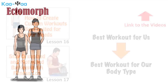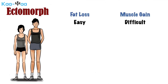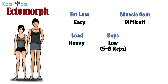For an ectomorph, it is really hard to put on weight, which means they do not have to worry about fat gain. On the other hand, their muscles have a tendency of remaining small and weak. Considering this, the best approach for them is to choose a workout routine with higher loads and low repetitions. The rest period between sets should be kept long. The high load provides their body high stimulus for muscle growth, while the fat loss aspect is discounted by keeping the reps low and rest long.